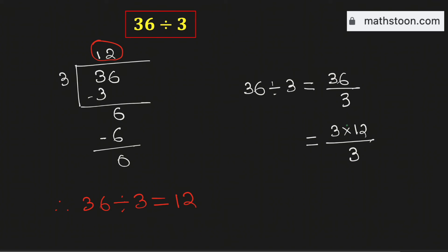Now we can cancel the common 3. So it will be equal to 12. Therefore 36 divided by 3 is equal to 12. And this is our final answer. Thank you for watching. Please like share and comment on the video.